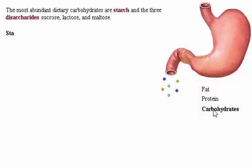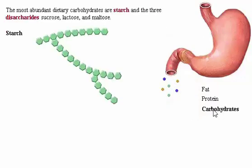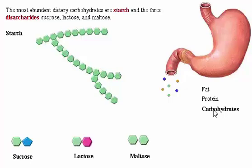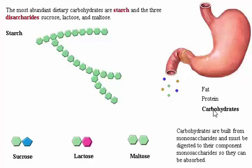The most abundant dietary carbohydrates are starch and the three disaccharides: sucrose or table sugar, lactose or milk sugar, and maltose or grain sugar. Carbohydrates are built from monosaccharides and must be digested to their component monosaccharides so they can be absorbed. In our representative molecules, geometric symbols represent single monosaccharides.